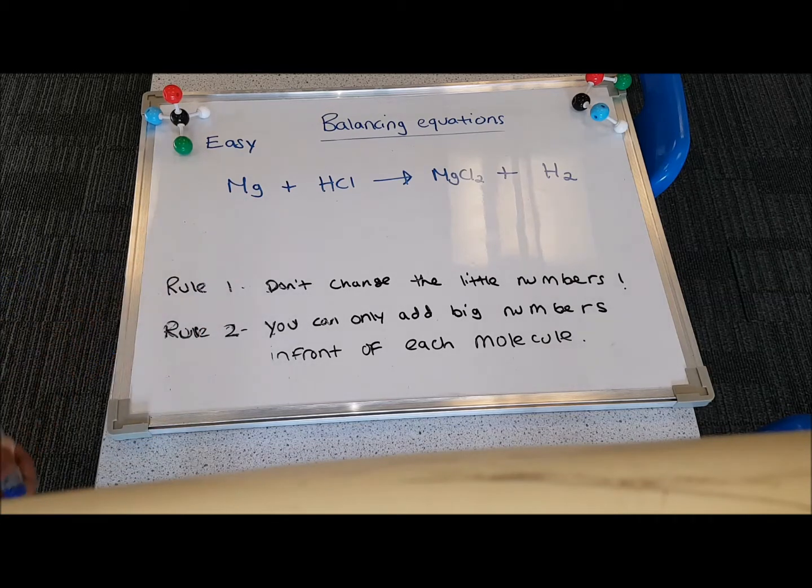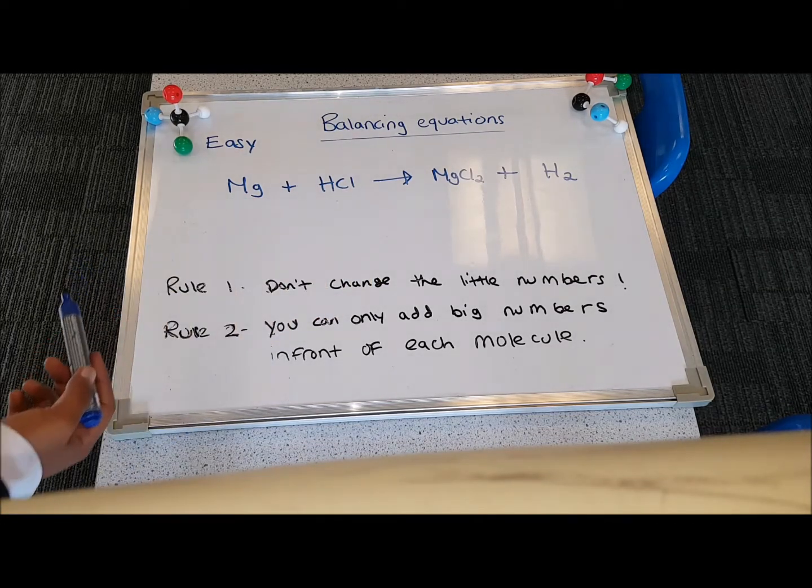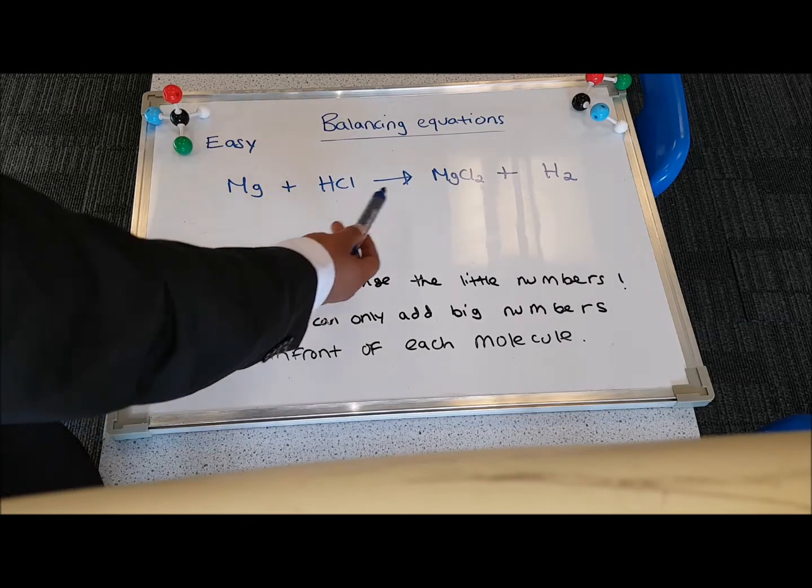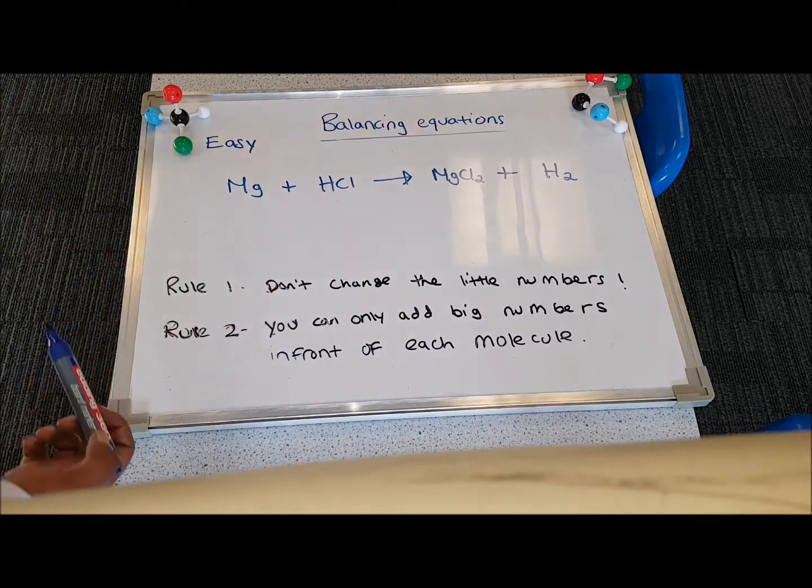The first question is an easy example. I'm going to let you pause the video and balance this equation. You have Mg plus HCl gives you MgCl2 and H2.